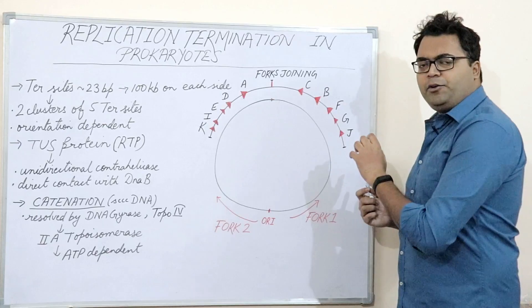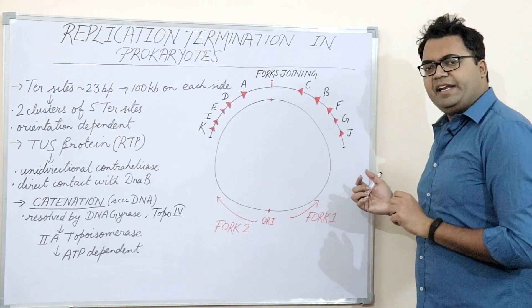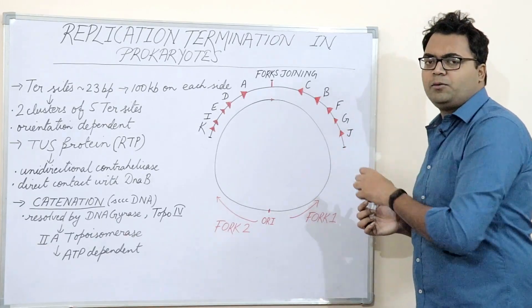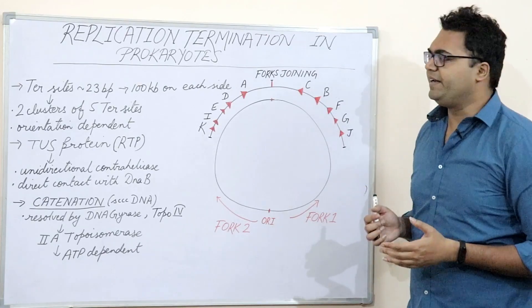So first of all, we have to take into account that the structure of the DNA in the prokaryotic system is circular. It is known as covalently closed circular DNA or triple C DNA.